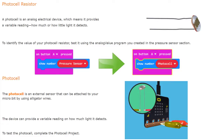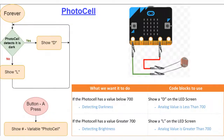To test the photocell, we're going to complete the photocell project. For this project, we're going to use a single condition asking whether it is light or dark in the room. If it is dark, we'll show the letter D on our micro:bit LED screen; if it's light, we'll show an L. The photocell is an analog sensor with a variable range from zero — the darkest — to 1023, the brightest.